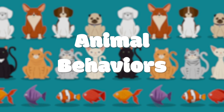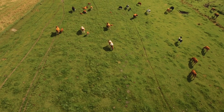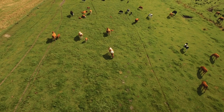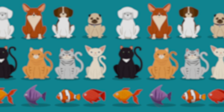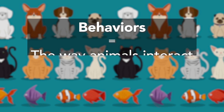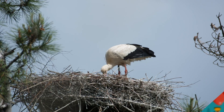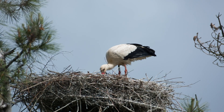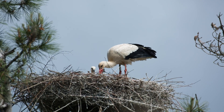Animal behaviors: every creature that lives on the earth behaves in distinct ways. Behaviors are the ways animals and humans interact with each other or with their environment. A bird builds nests where it will live and raise its baby birds.